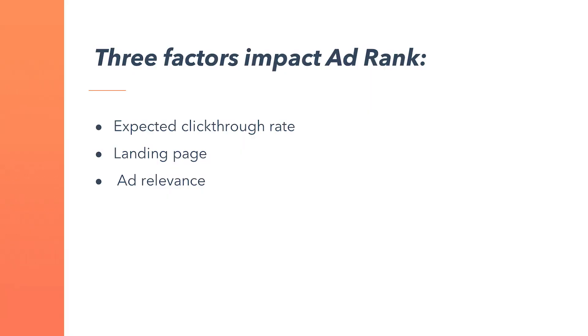Three factors impact ad rank: expected click-through rate, landing page, and ad relevance. Google Ads calculates ad rank for every ad in the auction. Ad rank determines your ad position and whether your ads are eligible to show at all.